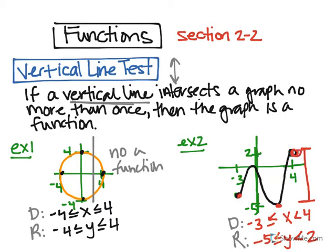Now, is this a function? Does it pass the vertical line test? If I were to draw a vertical line anywhere, it would only intersect the graph once. So yes, it's a function.